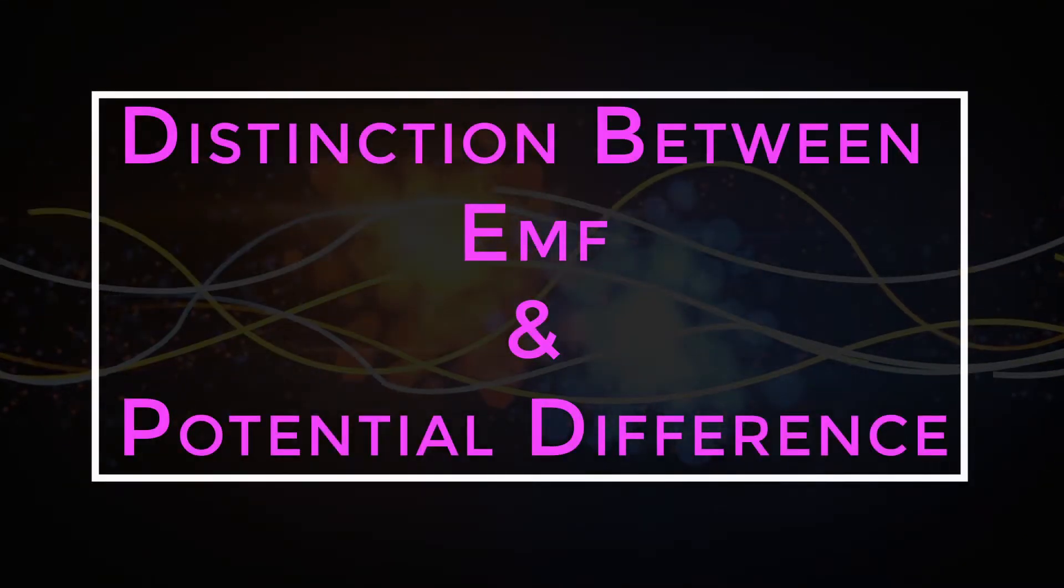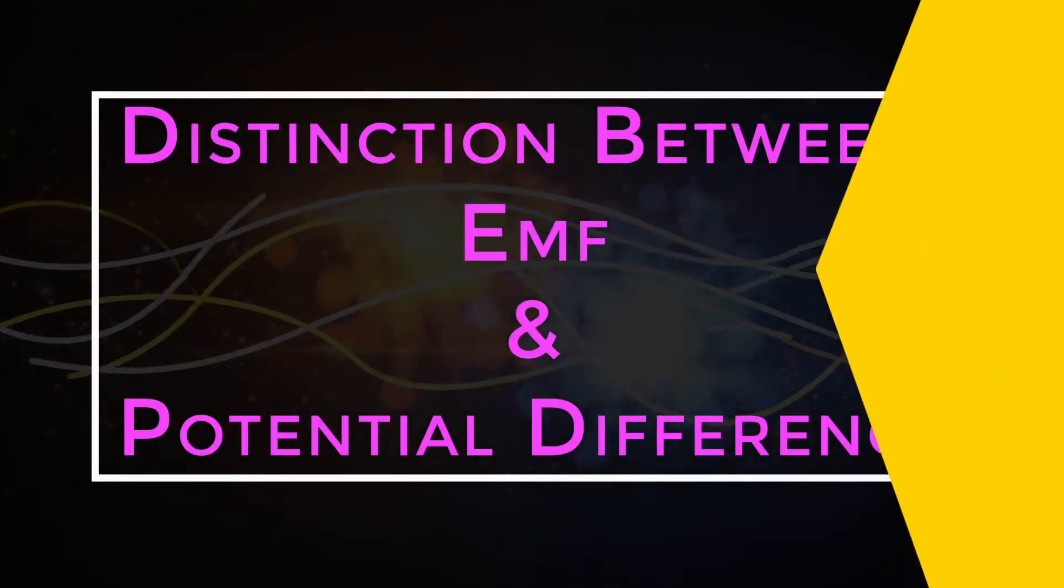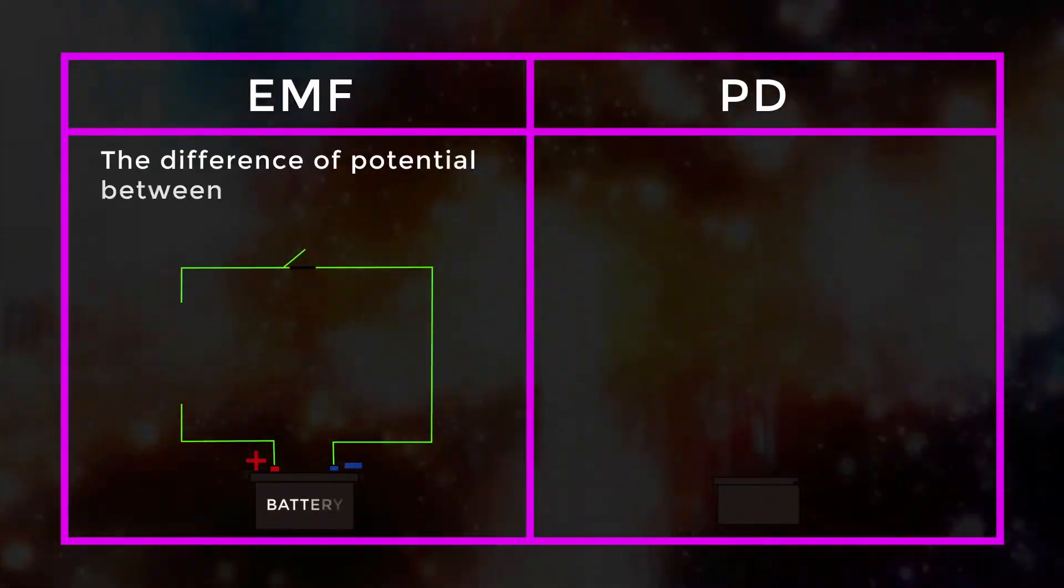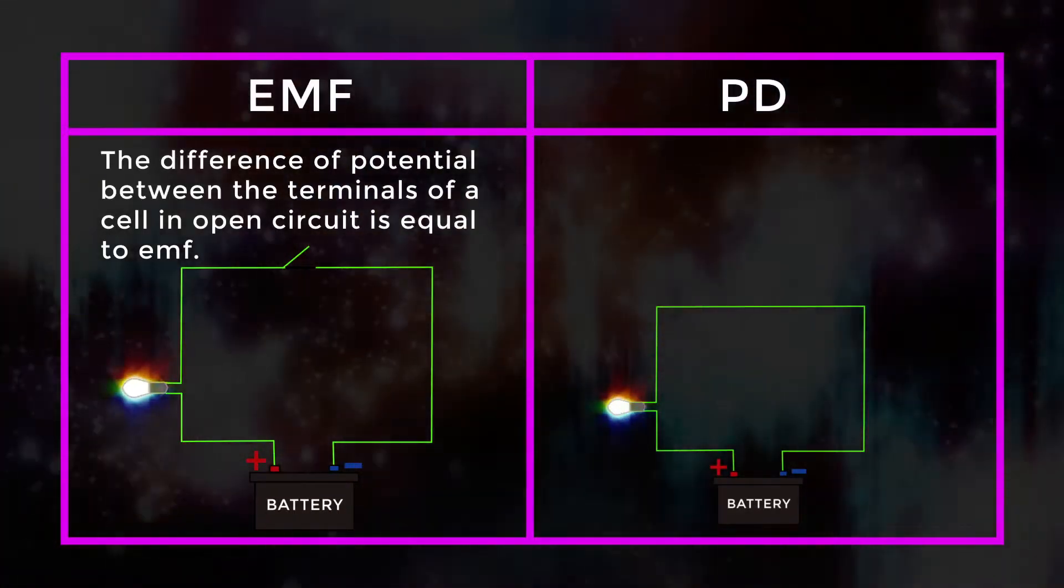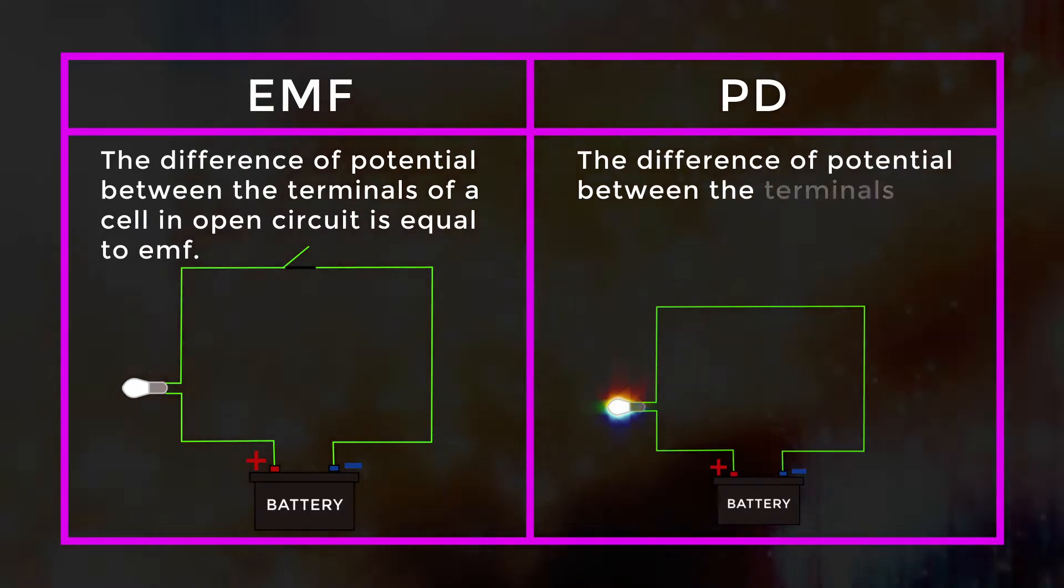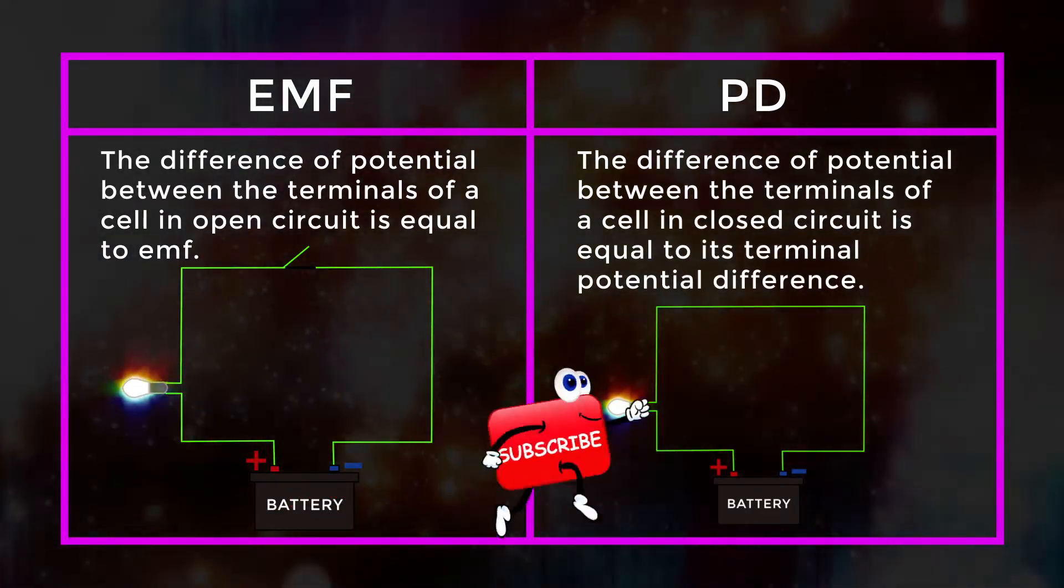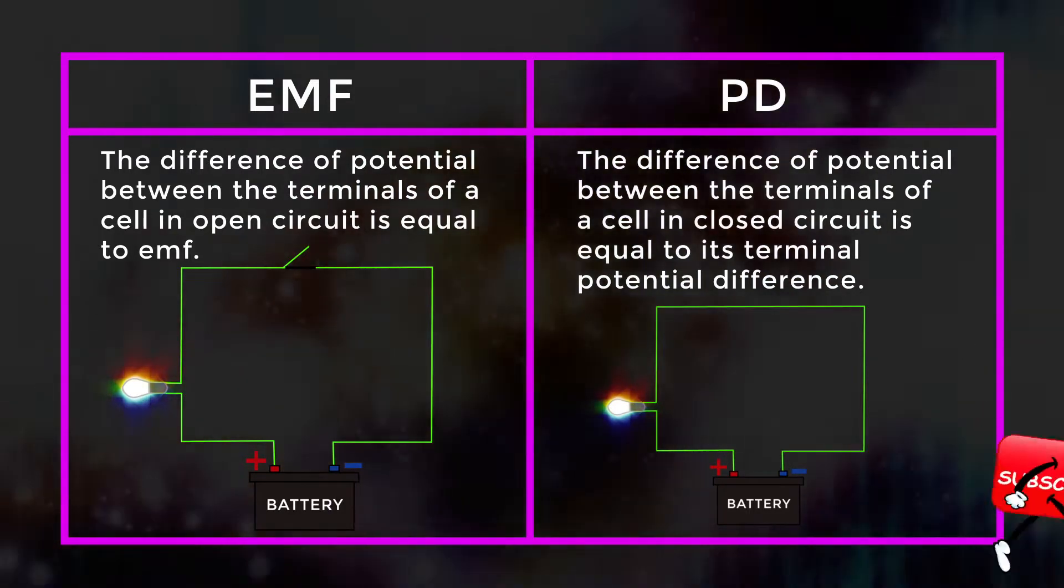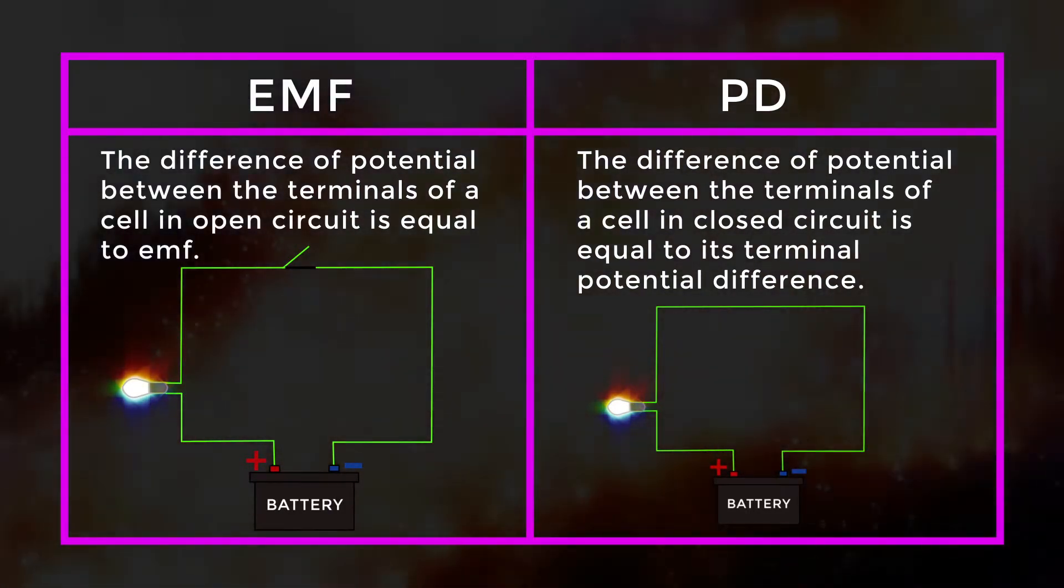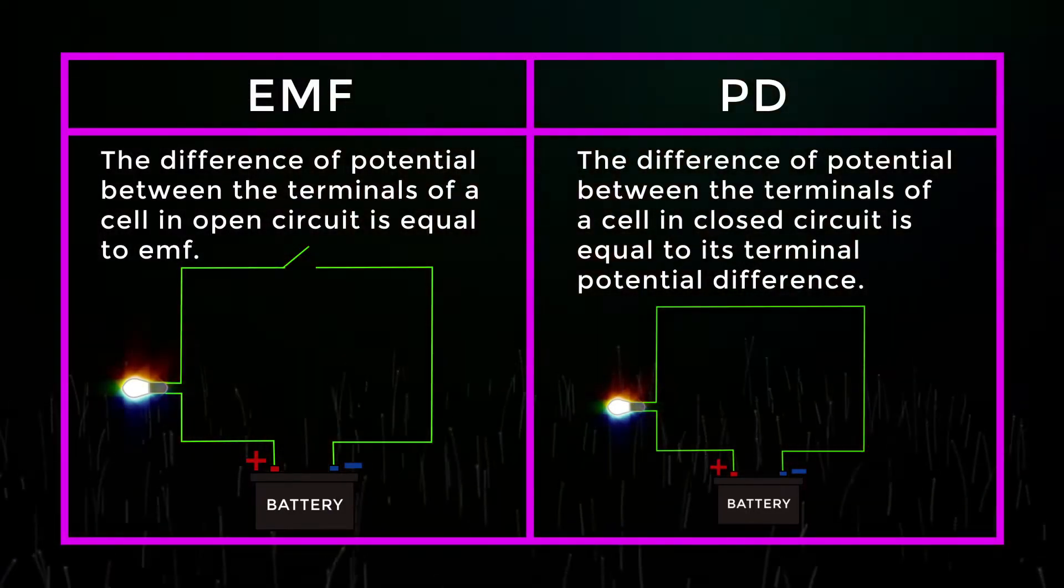Distinction between EMF and potential difference. The difference of potential between the terminals of a cell in open circuit is equal to EMF. The difference of potential between the terminals of a cell in closed circuit is equal to its terminal potential difference.